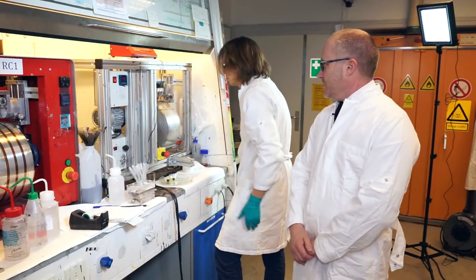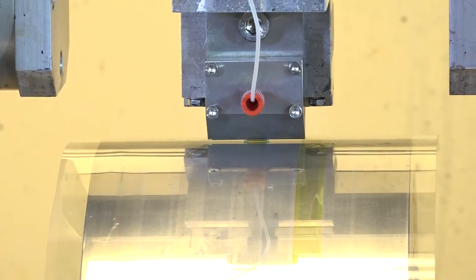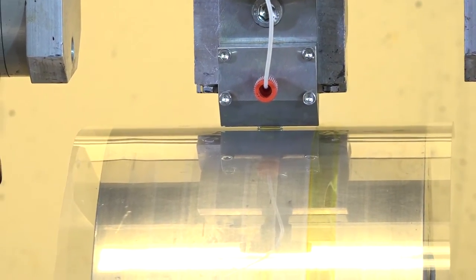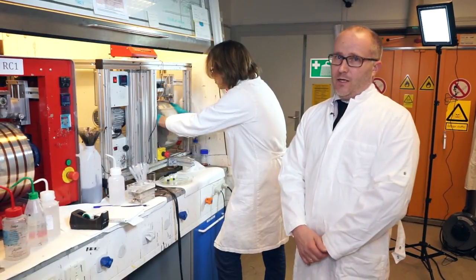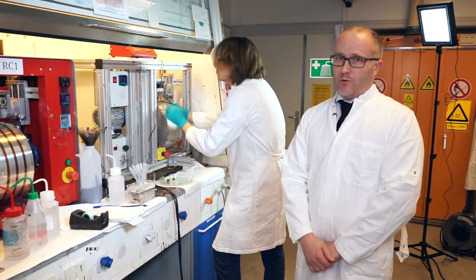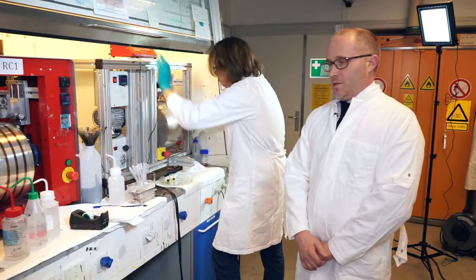What you're seeing here is a two-phase slot die coating lead iodide layer. This is the two-layer approach where you first apply the lead halide and afterwards the methyl ammonium iodide, and then you subsequently grow the perovskite layer over time.